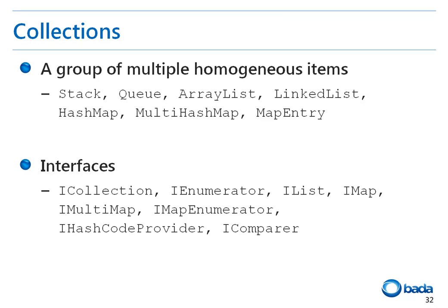In Bada, a collection refers to a group of items of the same type, such as a stack, queue, ArrayList, or LinkedList. The collection class provides various interfaces, including the iCollection, iEnumerator, iList, iMap, and iMultiMap interfaces.